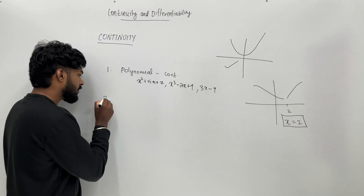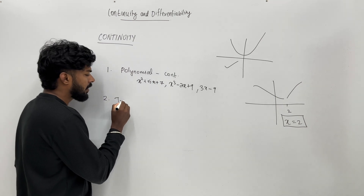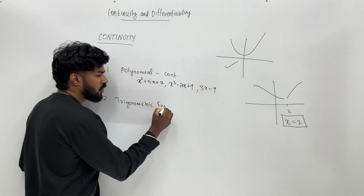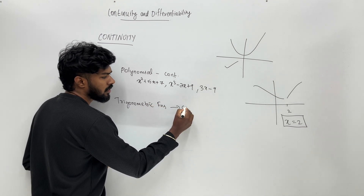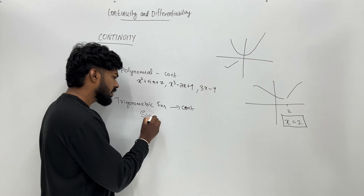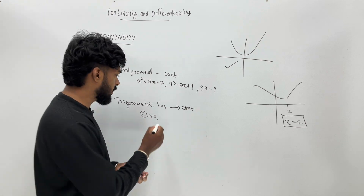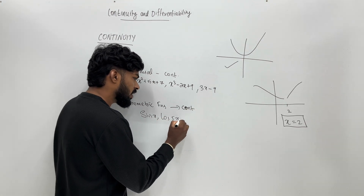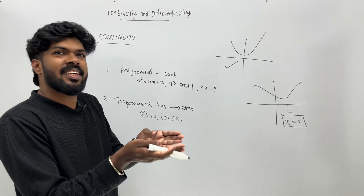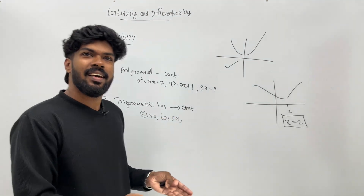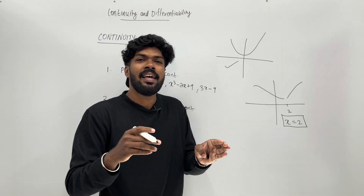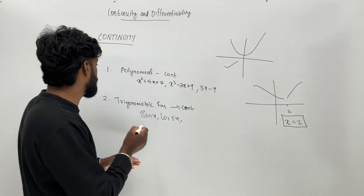All trigonometric functions are continuous. For example: sin x, cos x, tan x, cos 5x, tan 7x, cos 3x plus 5 sin — all of these are trigonometric functions and they are continuous.